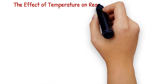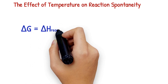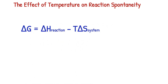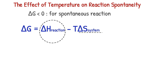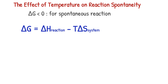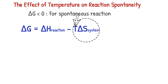Effect of temperature on reaction spontaneity. For a reaction to be spontaneous, the free energy change must be negative. In most cases, the contribution of enthalpy to the free energy change is much larger than the contribution of entropy. For this reason, most exothermic reactions are spontaneous. The negative enthalpy change helps make the free energy change negative. However, temperature influences the magnitude of the entropy term, so for many reactions the overall spontaneity depends on temperature.